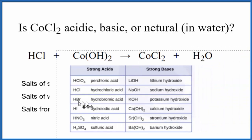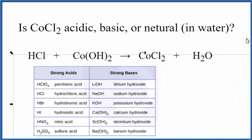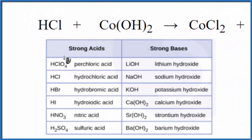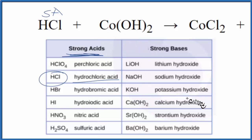This table is a really good one to memorize. Here's HCl, hydrochloric acid — it's a strong acid, SA up there. We're looking for cobalt-2 hydroxide here, and it's not on our list. That means it's going to be a weak base.